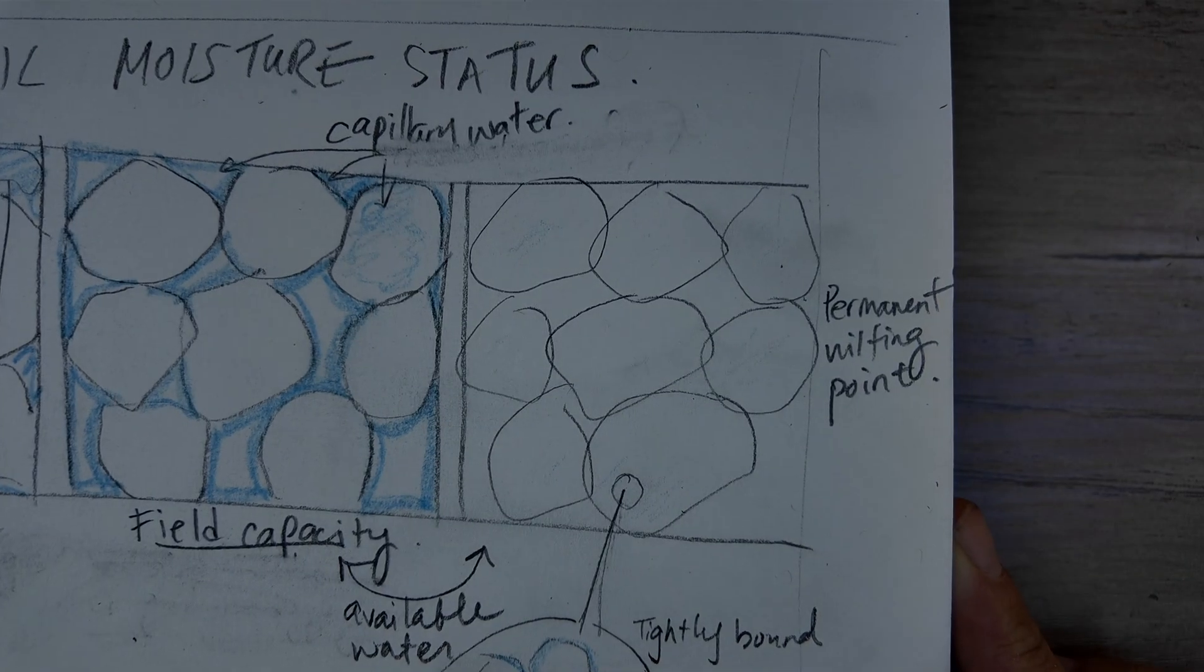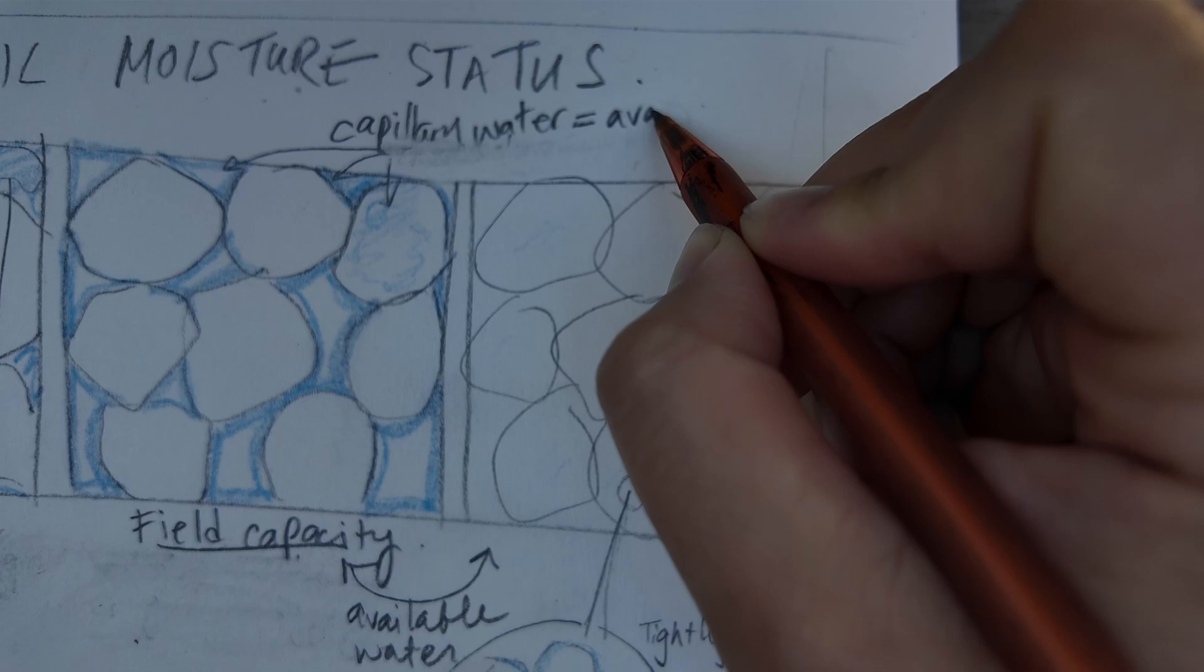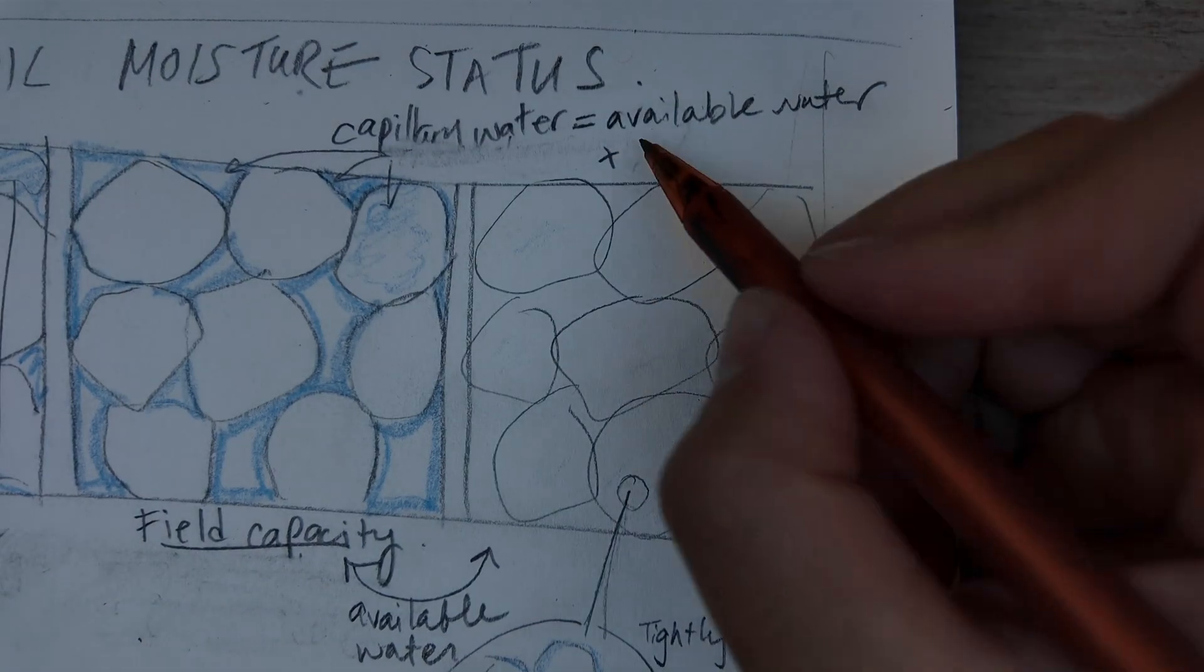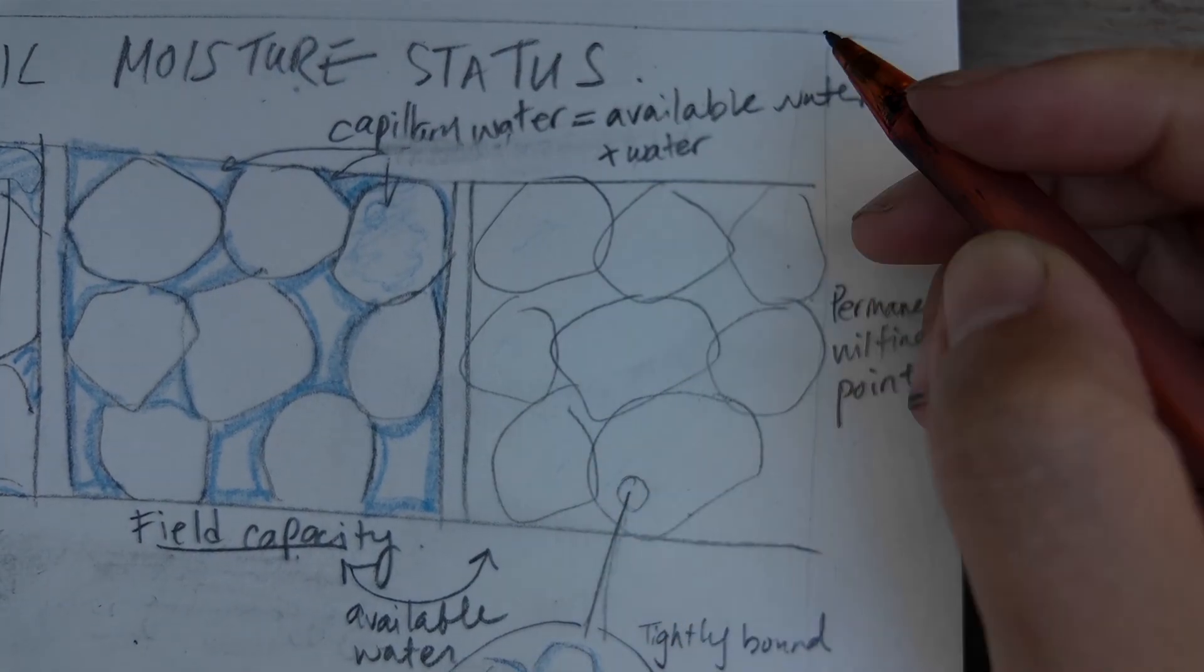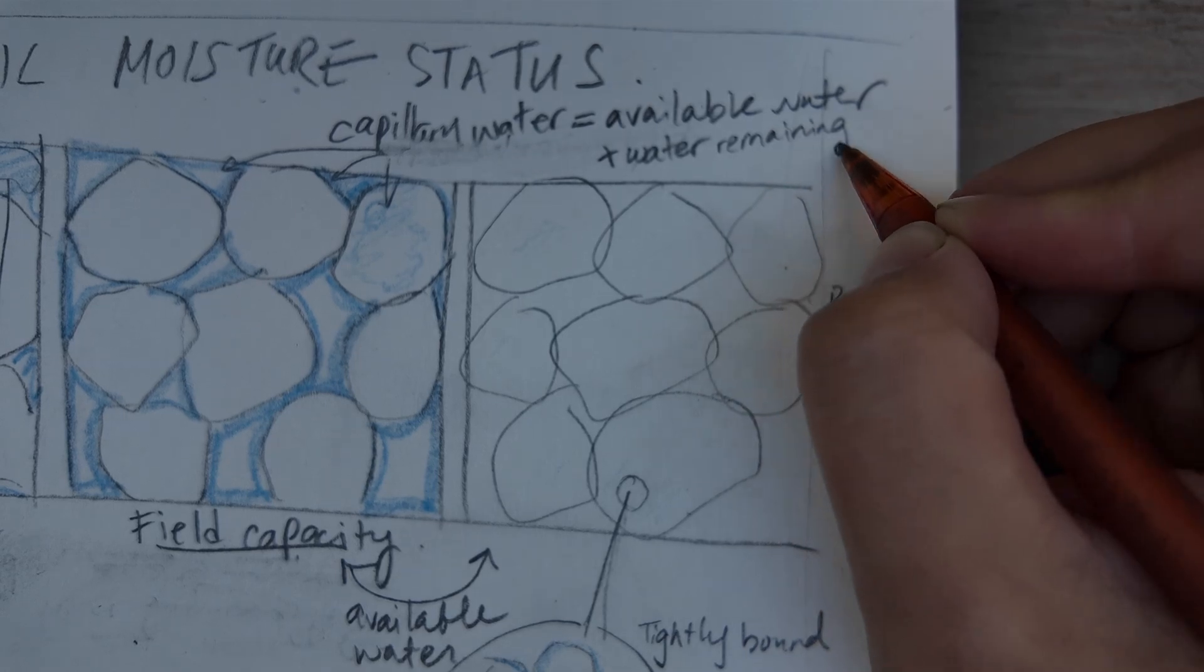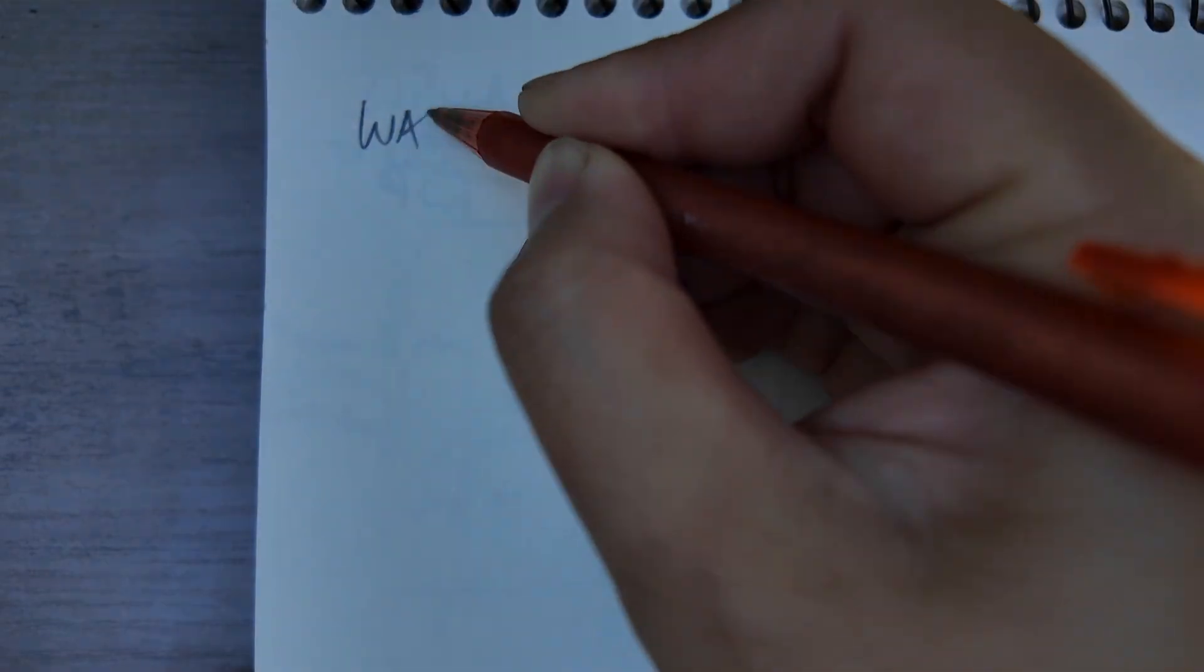In case you're wondering how that's different from capillary water, there is still a bit of water left in the soil beyond the permanent wilting point, which is still considered capillary water. It's just held too tightly for plants to get.